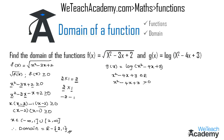Let us find the factors of this expression by the factorization method. The coefficient of x² is 1 and the constant term is 3, so multiplying them gives 3, and the factors of 3 are 3 × 1. We need the factors to sum to minus 4, and minus 3 plus minus 1 equals minus 4. So we write the expression as x² - 3x - x + 3 > 0.